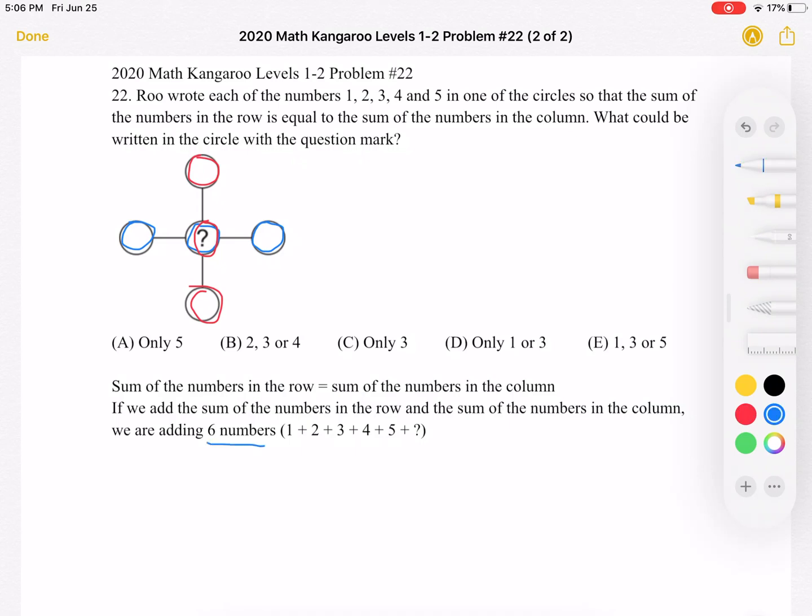We have the five numbers that we're placing, and we're adding the question mark number twice. So our total sum is 1 plus 2 plus 3 plus 4 plus 5 plus, again, that question mark. And what do we know about this sum?